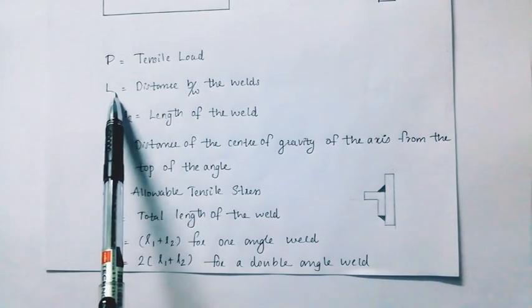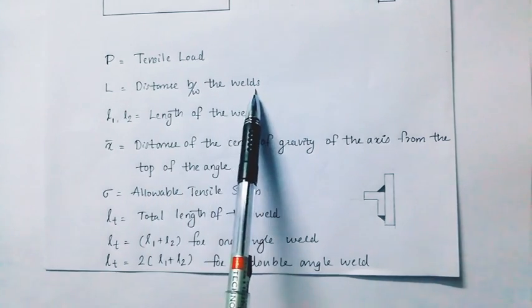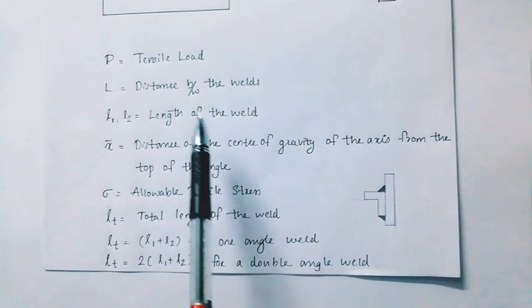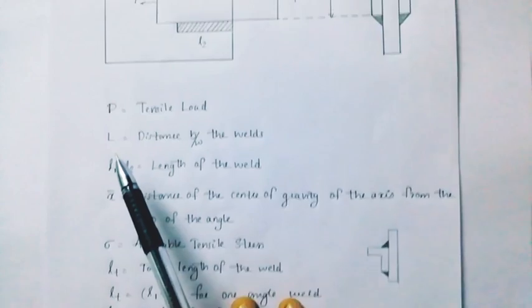Capital L is equal to the distance between the welds. Small L1 and L2 are the lengths of the weld.